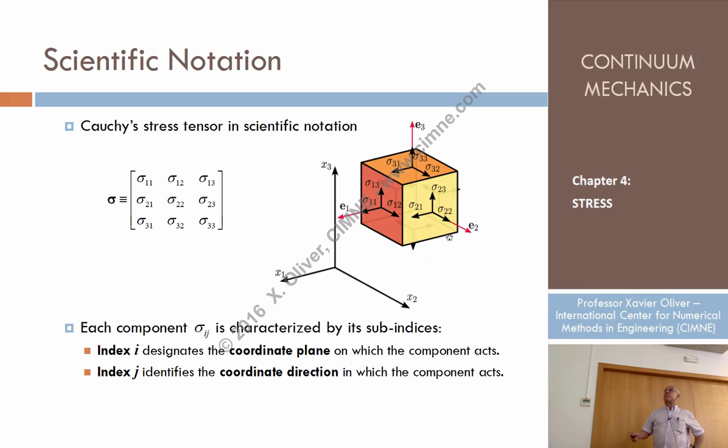So i equal 1 provides sigma 1, the three components of the traction vector acting on the plane which is orthogonal to u1. Here, the first index of the three components are two, so they mean that they are components of the traction vector on the plane which is normal to u2. And here, the three components start with three, which means that they are components of the traction vector acting on plane normal to u3.